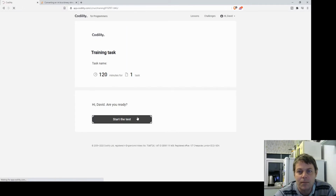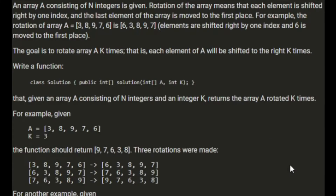An array A consisting of N integers is given. Rotation of the array means that each element is shifted right by one index, and the last element of the array is moved to the first place. For example, rotation of [3, 8, 9, 7, 6] becomes [6, 3, 8, 9, 7]. The last element comes to the front.